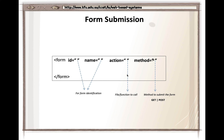These two parameters are action and method. Once the user enters the data, two questions arise: where do I send this data, and how do I send it? The action parameter defines where you want to send the data — there is a script on the server side expecting data so it can process it. The method parameter specifies how you want to send the data back to the server. There are two basic methods used in HTTP: GET and POST.